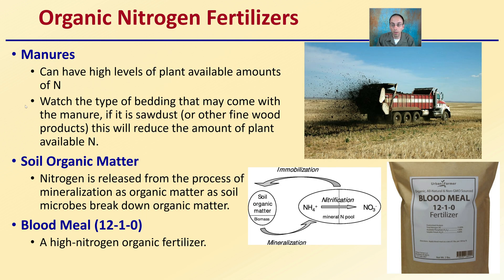Organic forms of nitrogen fertilizer include manures, which can have high levels of plant-available nitrogen, but you want to watch the type of bedding that may come with the manure. For example, if it contains sawdust or other fine wood products, this will reduce plant-available nitrogen because that nitrogen will be consumed during the decomposition of the sawdust. Nitrogen is also released through the process of mineralization as soil microbes break down soil organic matter. Blood meal, at 12% nitrogen, is a high-nitrogen-content organic fertilizer.